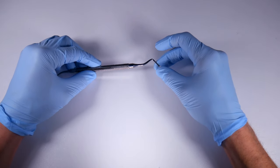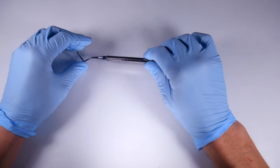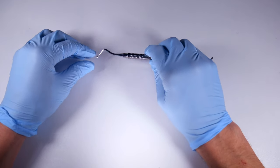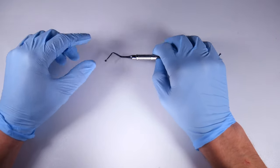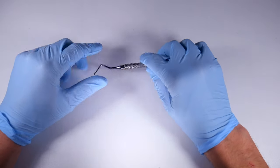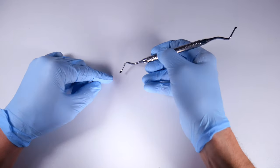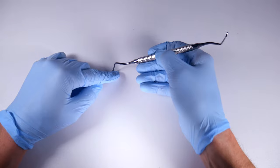It's a serrated curette. It's a little bit more aggressive, and it's terrific for lower third molar sites. You can actually take this and get in sort of right distal lingual to that second molar once the tooth is out.